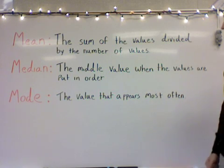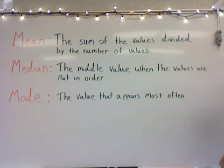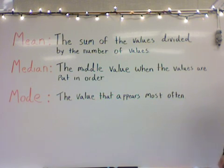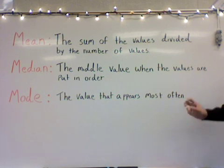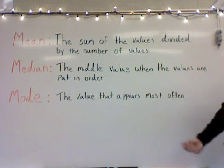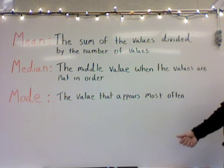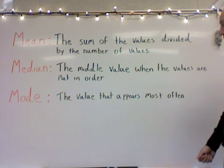Let's look at our vocabulary words. The mean is the sum of the values divided by the number of values. The median is the value that is right in the middle of our number set, and the mode is the number that appears the most often.